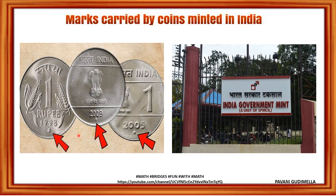These symbols tell us in which place or in which mint in the country the coin was made. For example, a diamond means it's made in Mumbai mint, a star means it's from Hyderabad, a dot means it is from Noida, and if there is no mark, it's been made in Kolkata mint. Kolkata is the oldest mint, so it did not require any mint mark. It was established in 1757.